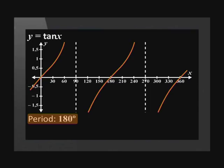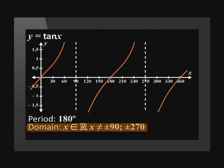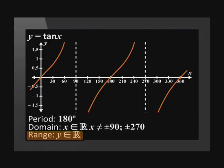The period of the standard tan graph is 180 degrees. The domain of this graph is x is an element of real numbers, but it is not equal to the asymptotes which are 90 and 270 degrees. The range of the standard tan graph is y is an element of real numbers.